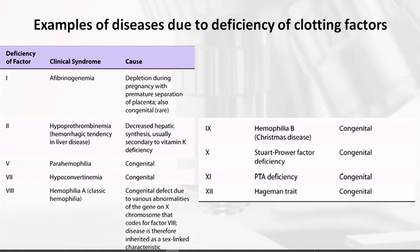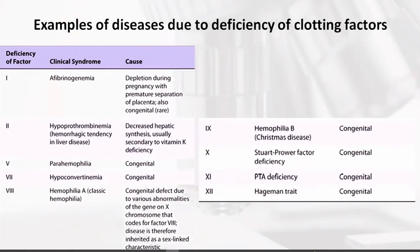Factor 8 is very important — hemophilia is formed, that is classic hemophilia. Factor 8 is basically anti-hemophilic factor, or anti-hemophilic factor A. When it is not present, hemophilia A is formed. The cause is basically a congenital defect due to various abnormalities of the gene on the X chromosome that codes for factor 8.